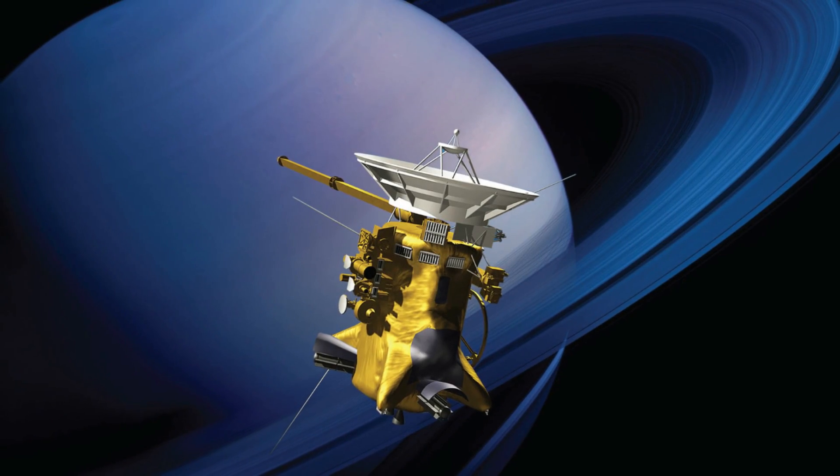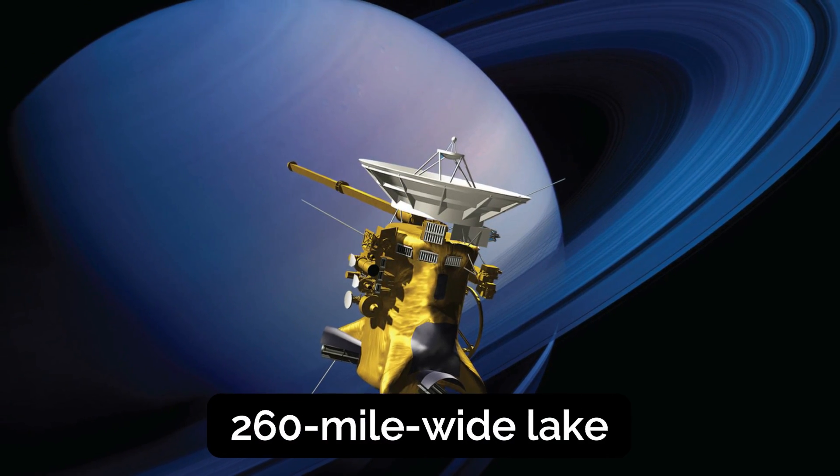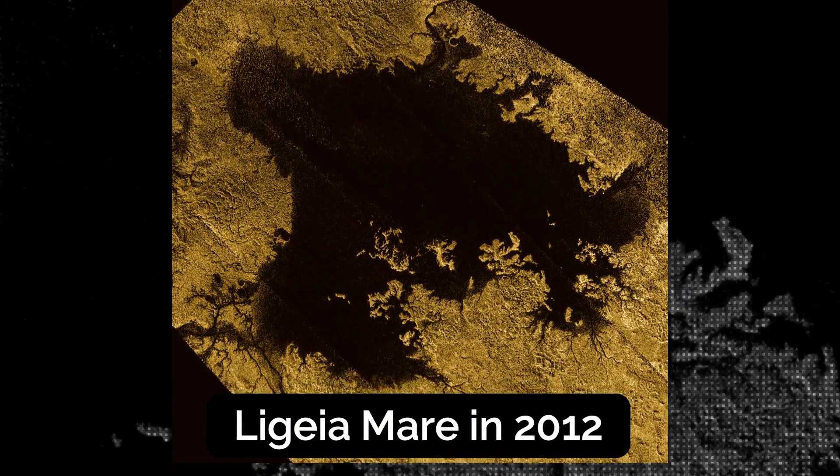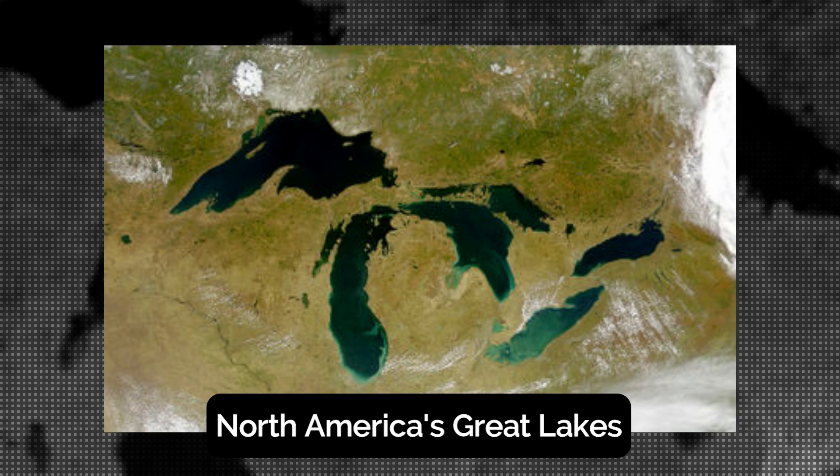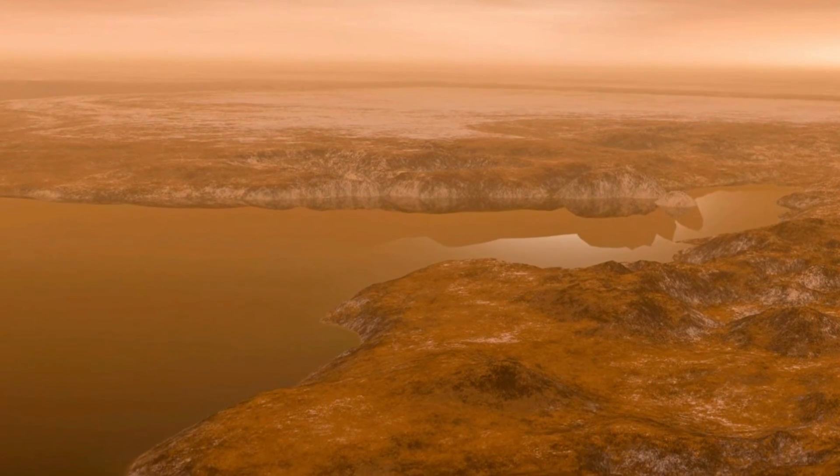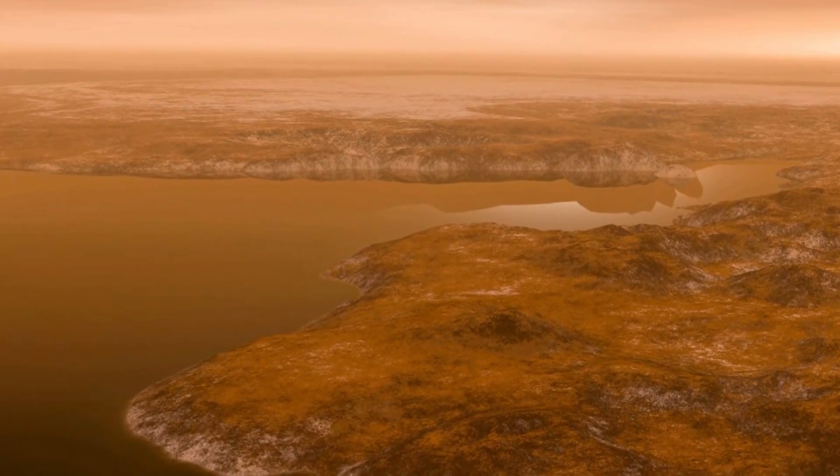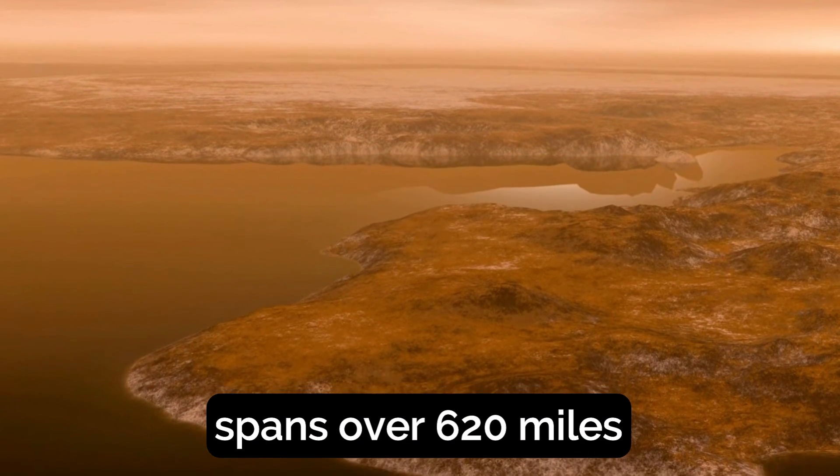The Cassini spacecraft discovered a massive 260-mile wide lake called Ligeia Mare in 2012, which is larger than any of the North American Great Lakes and is Titan's second largest body of liquid after the Kraken Mare, which spans over 620 miles.